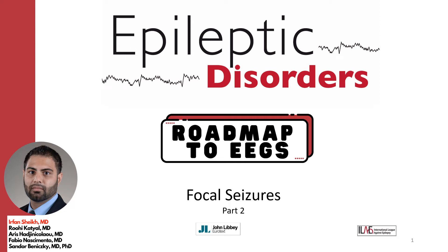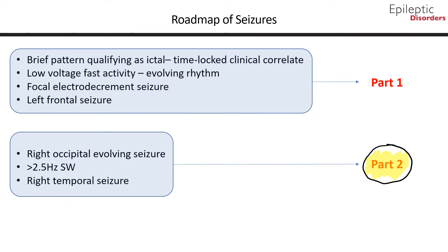Hello and welcome back to Roadmap to EEGs. My name is Irfan Sheikh, and in this module we will continue our discussion with regards to focal seizures. In part two of this module, we will discuss the following focal seizures: a right occipital evolving seizure, a seizure with greater than 2.5 hertz spike wave activity, and a right temporal seizure.